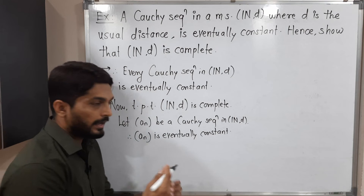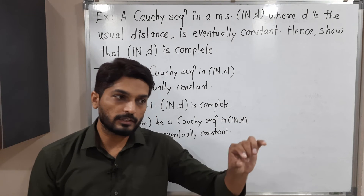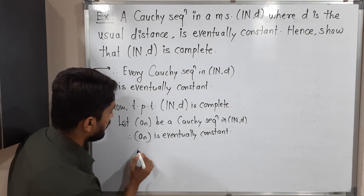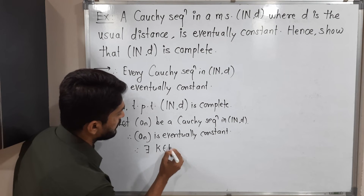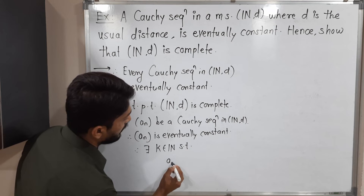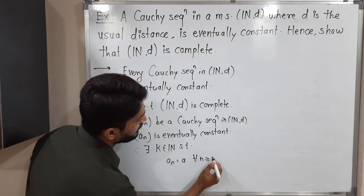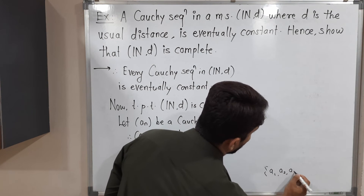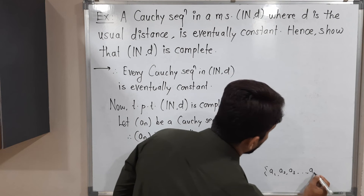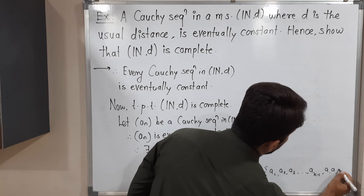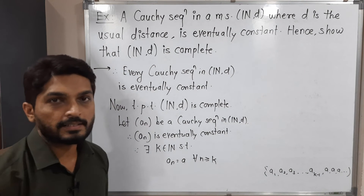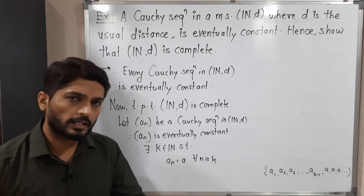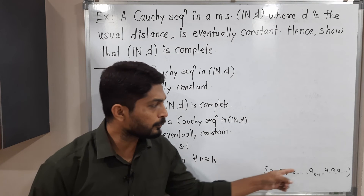Therefore An is eventually constant. Eventually constant means the first few terms are different, but after some fixed term all terms are the same. Therefore there exists some natural number K such that An is equal to A for all n greater than or equal to K. That means the sequence looks like: A1, A2, A3, ..., A K minus 1, and after that all terms are A, A, A, A.